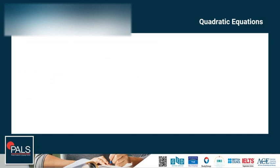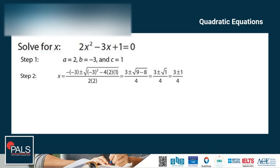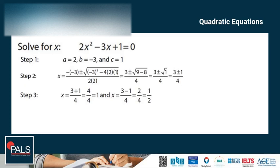Let's apply the steps using an example. Solve for x: 2x squared minus 3x plus 1 is equal to 0. Step 1: a is 2, b is negative 3, and c is 1. Step 2: Plug in the values and simplify. Step 3: Use the plus and minus to show the two final answers — x is equal to (3 plus 1) over 4, which is 1, and x is equal to (3 minus 1) over 4, which is 2/4 or one half. So the final answer is x equals 1 and x equals one half.